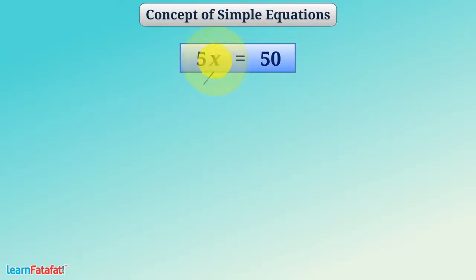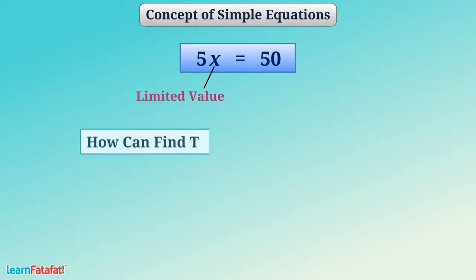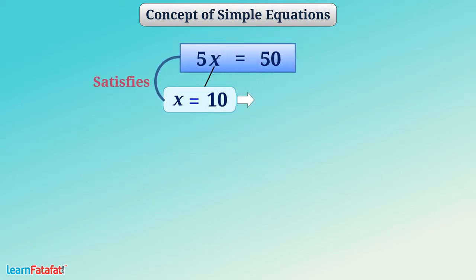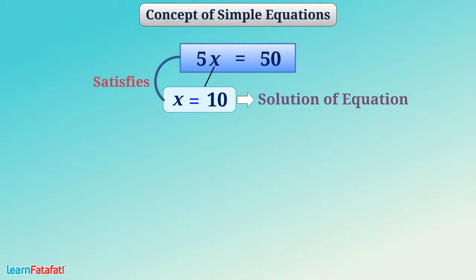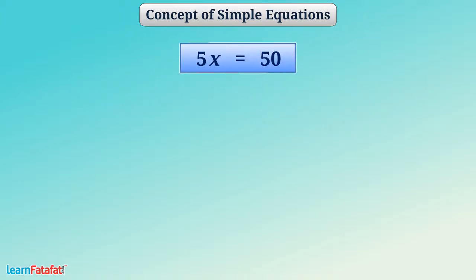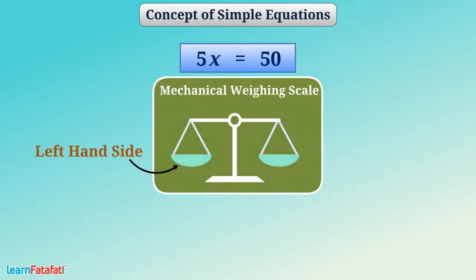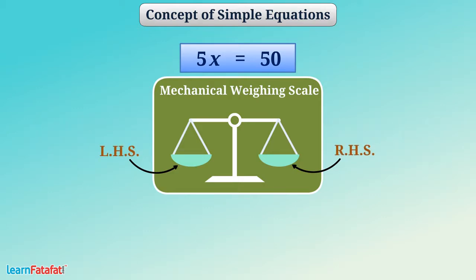If the value of the variable is limited, then how can we find that value? The value of the variable which satisfies the equation is called the solution of the equation. We can think of the equation as a mechanical weighing scale which has two sides: the left-hand side and the right-hand side, written as LHS and RHS respectively.